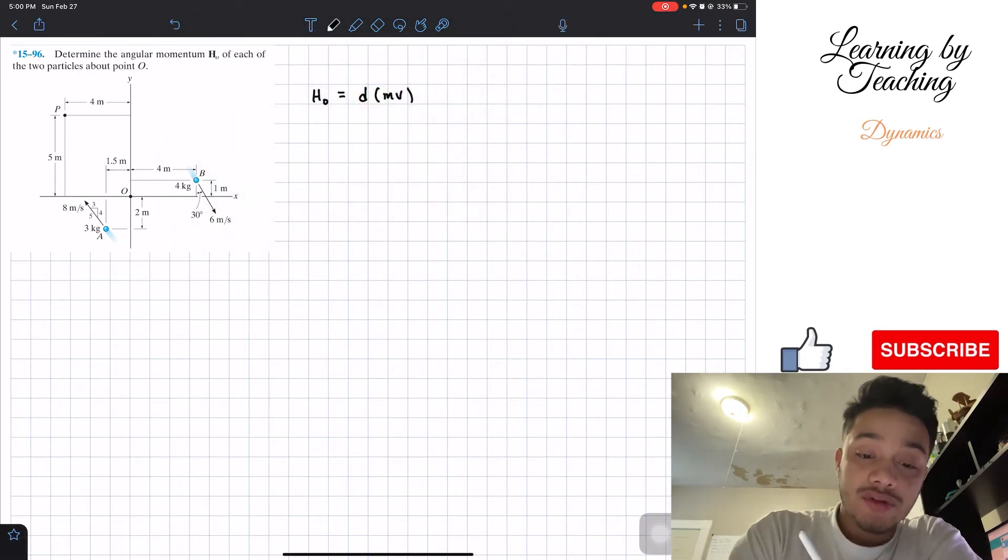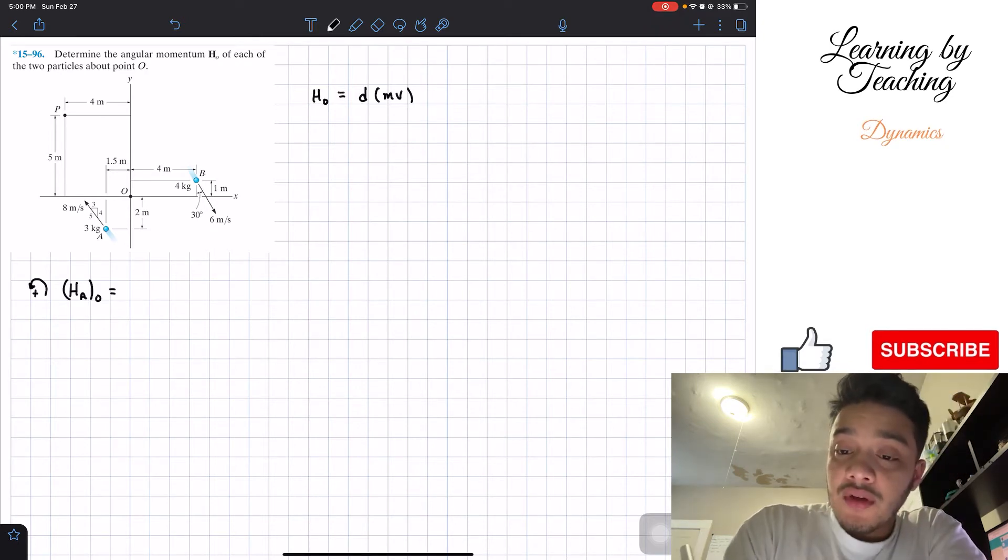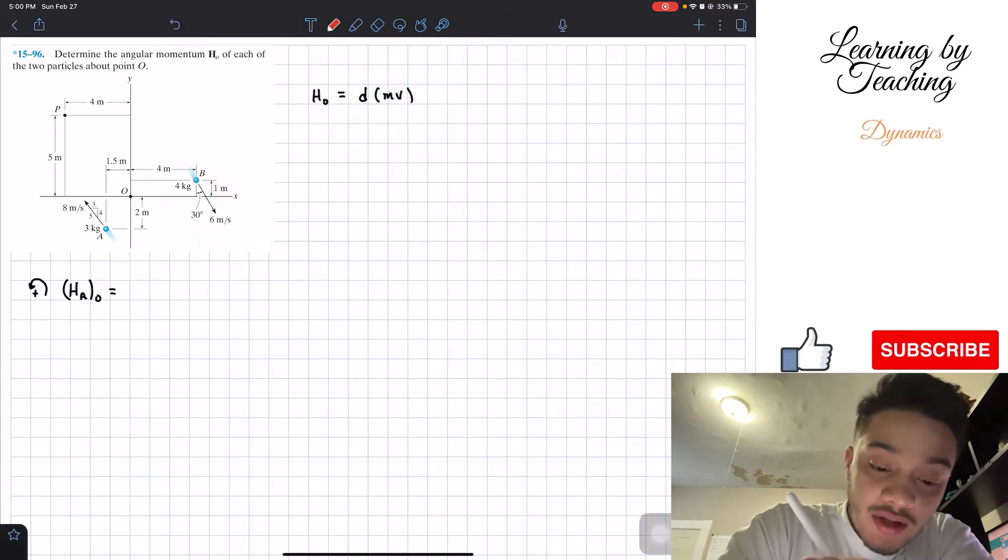So we're going to determine this angular momentum for each of the two particles. We're going to divide that for two particles. I'm going to assume that going counterclockwise is positive, and we're going to start with the angular momentum that particle A is doing about point O. We're going to focus on particle A. Its mass is equal to three kilograms, and we're going to divide its velocity into its x component and y component.